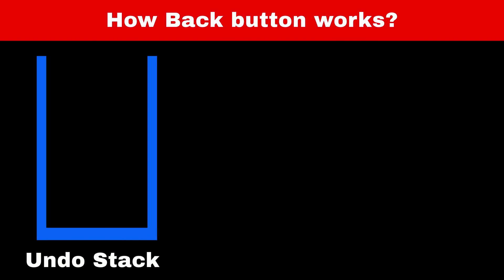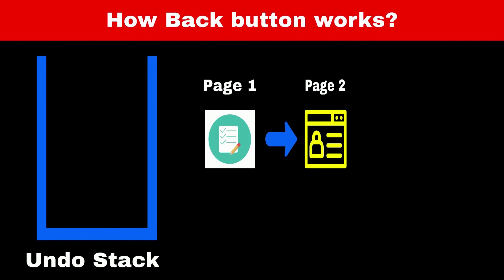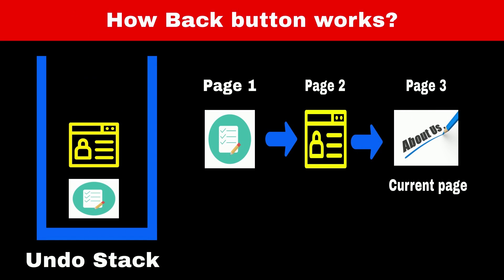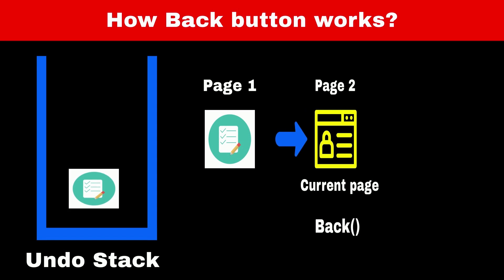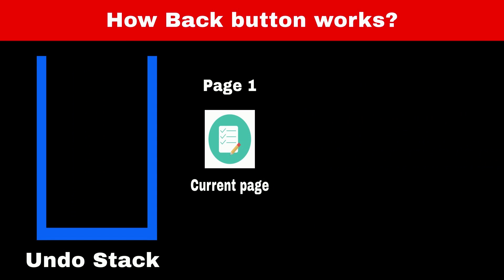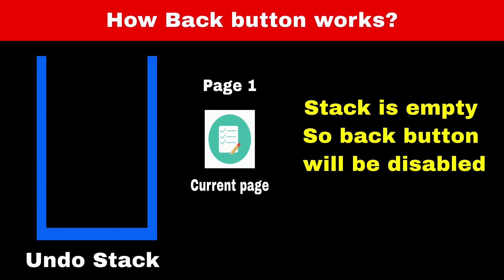Consider each web page as an object stored in what we'll call an undo stack. When we move from page 1 to page 2, page 1 is added to the undo stack. When we move from page 2 to page 3, page 2 is added. Now we are on page 3. Whenever we press back, we display and remove the page at the top of the stack. Pressing back on page 3 shows page 2, which is at the top. Then pressing back again shows page 1. Now the stack is empty, so the back button will be disabled.